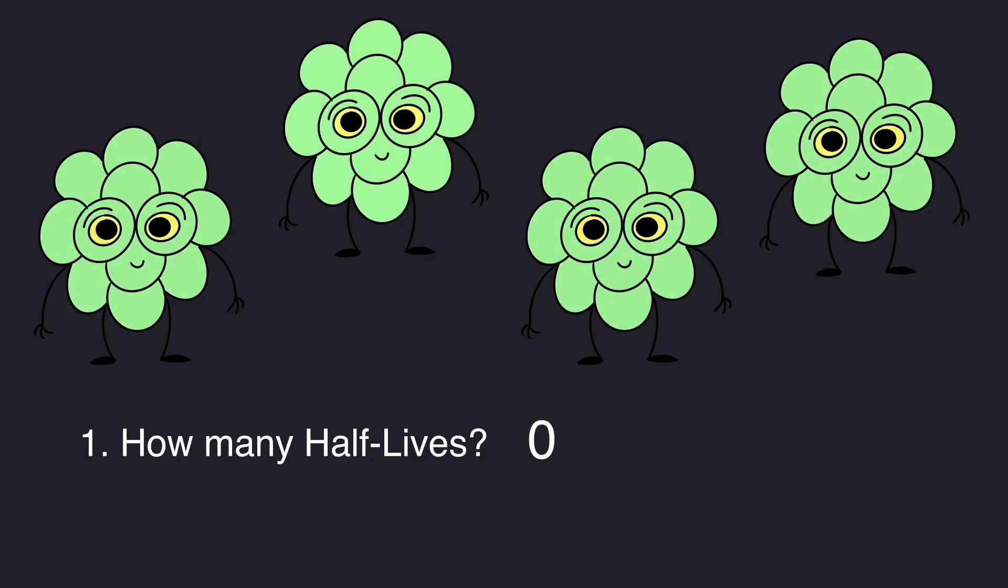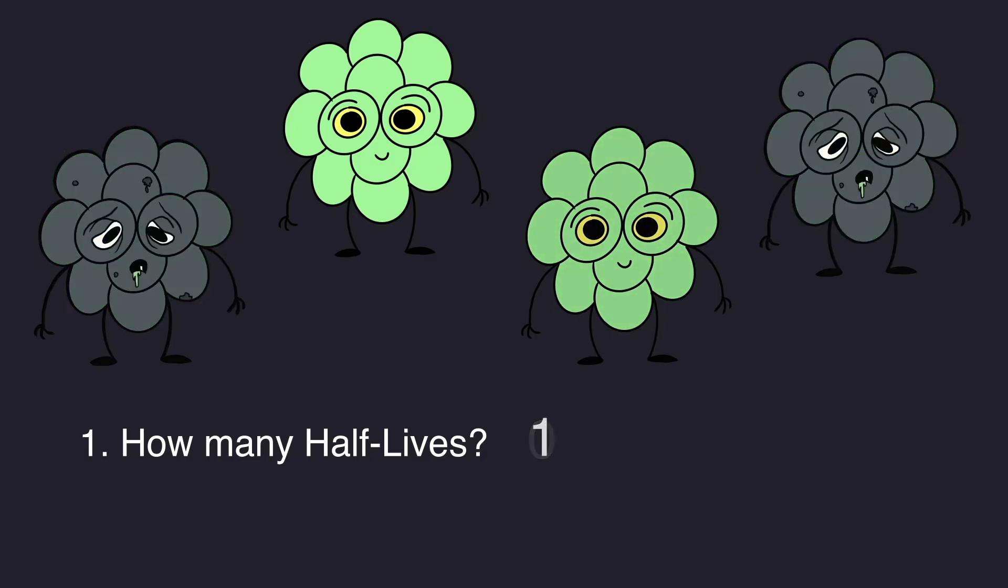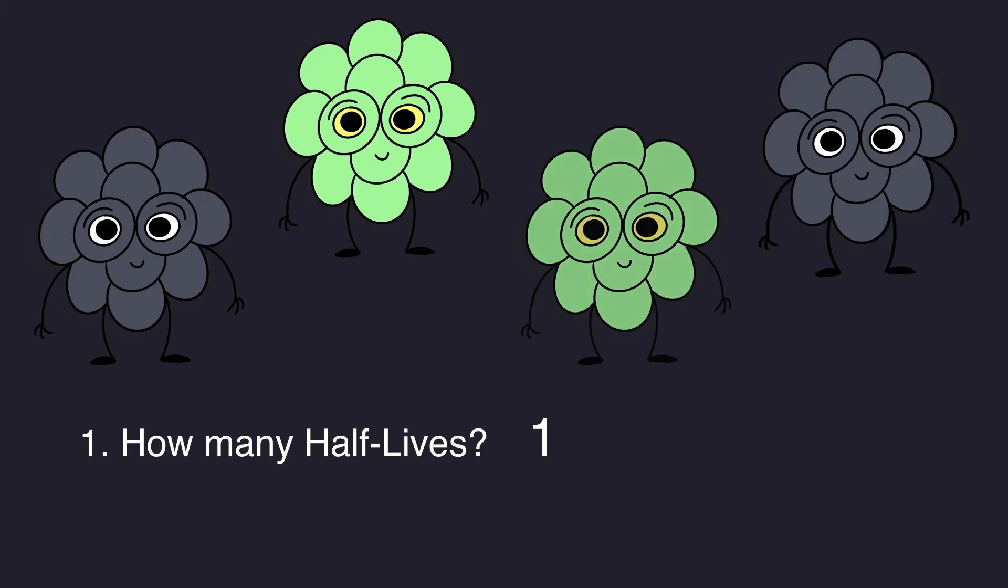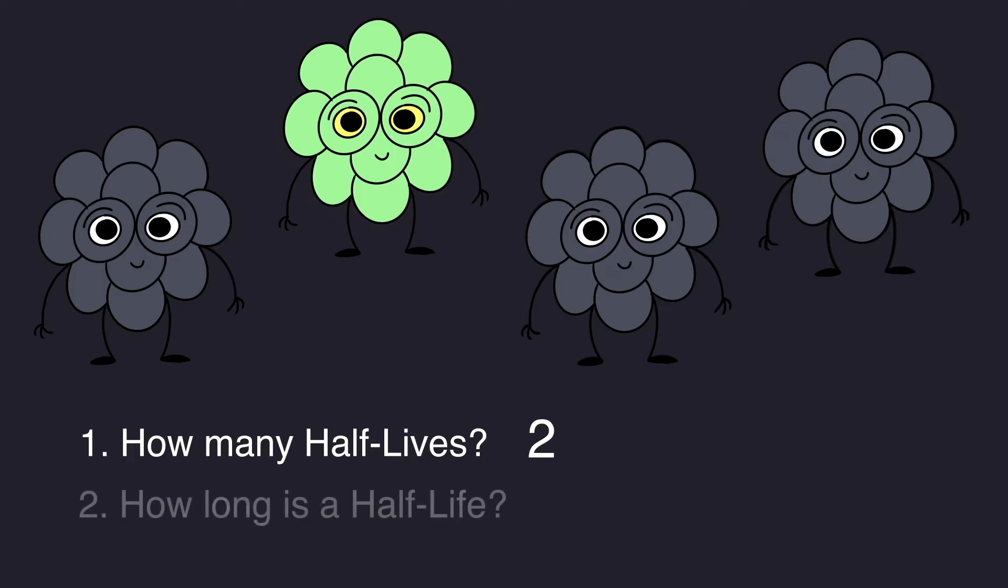Well, if we start at one, when all the atoms are uranium, then after one half-life, half of the atoms would be left as uranium. And then after two half-lives, a quarter of the atoms would be uranium. So again, it's two half-lives old.